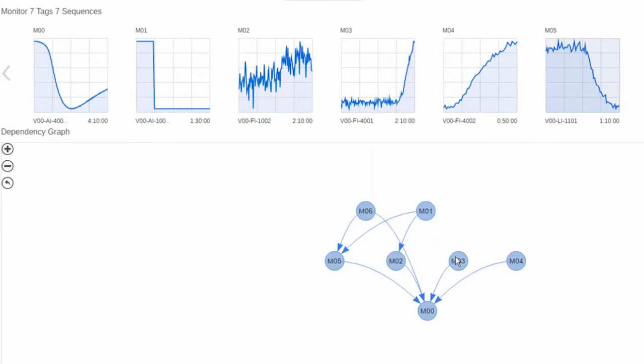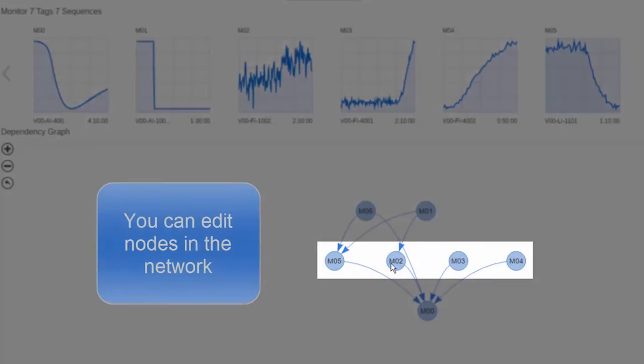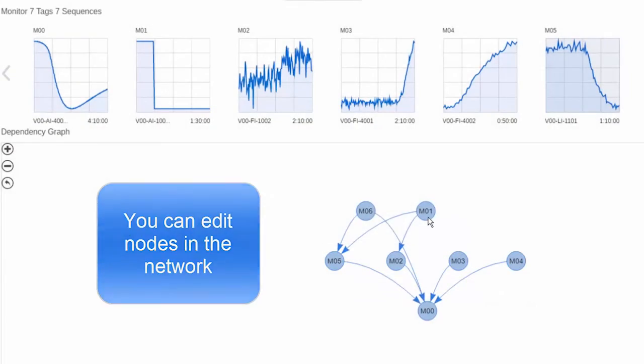Lastly, there's a node diagram showing the relationship between the variables and the KPI of interest. The layers denote the time delays between variables, with the lower layers being closer in time to the KPI.